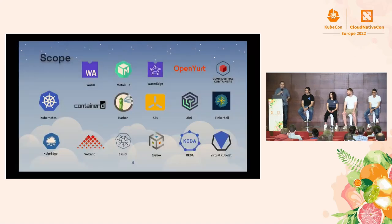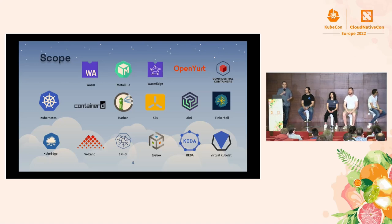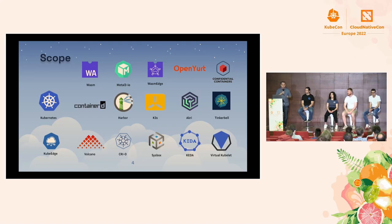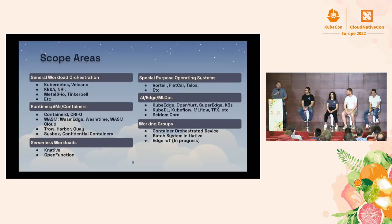The scope of the TAG contains a lot of different projects — a wide variety of them. You have the runtimes, projects that allow you to run workloads at the edge, things like confidential containers that allow you to run containers in a secure way, and things like Kata that allow auto-scaling depending on different types of metrics. You also have traditional projects like Kubernetes and containerd that allow you to orchestrate workloads, and more specifically, different areas in general workload orchestration.